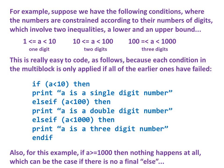Also for this example, if a is greater than or equal to 1000, then nothing happens at all, which can be the case if there is no final else.